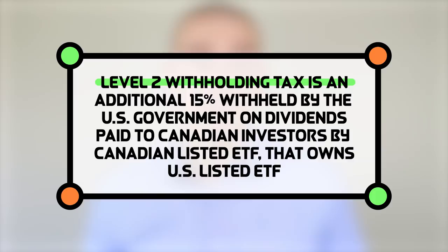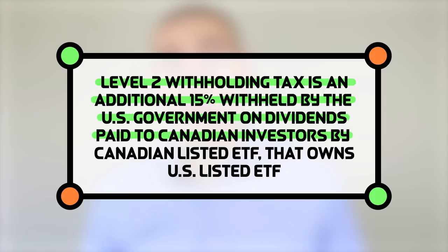Level 1 withholding tax is the tax levied by any foreign country, including the US, on dividends paid to a Canadian investor. Level 2 withholding tax is an additional 15% withheld by the US government on dividends paid to a Canadian investor by a Canadian-listed ETF that owns a US-listed ETF. Taxes are first withheld when the dividend is paid from a foreign company to the US-listed ETF, and then again when the US-listed ETF passes that dividend on to a Canadian investor.